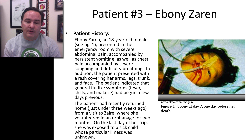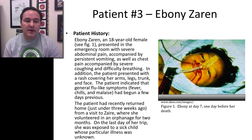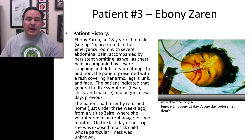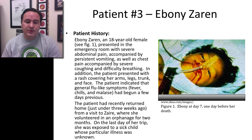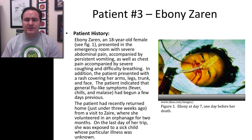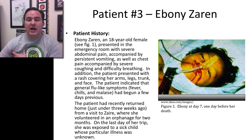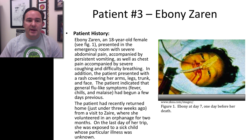The patient indicated that general flu-like symptoms were the first things noticed — fever, chills, aches — and then it just kept getting worse. It was found in the history that she had returned from a trip to Zaire where she had been volunteering in an orphanage for about two months. Right at the very end of her volunteer work, there was a very sick child whose illness was unknown, and she was near this child, so it's likely that sick child perhaps passed something on to patient number three.